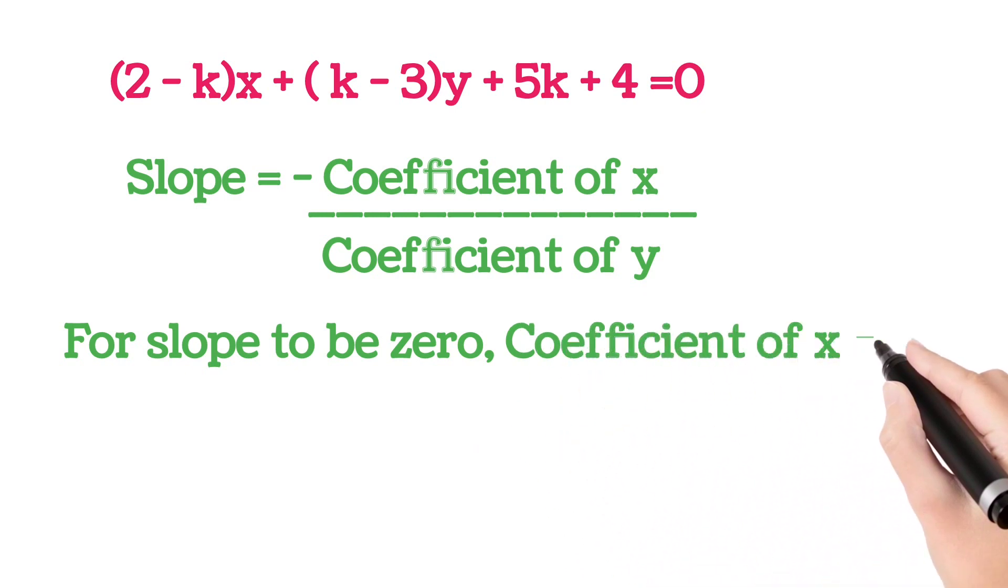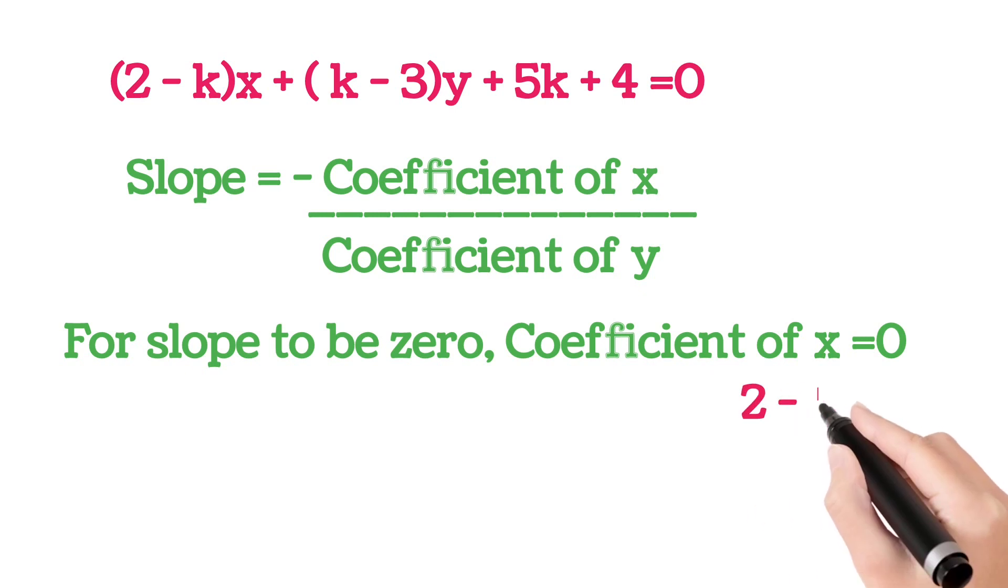Now equating coefficient of x in above equation to 0. That is 2 minus k equals 0, which gives k equals 2.